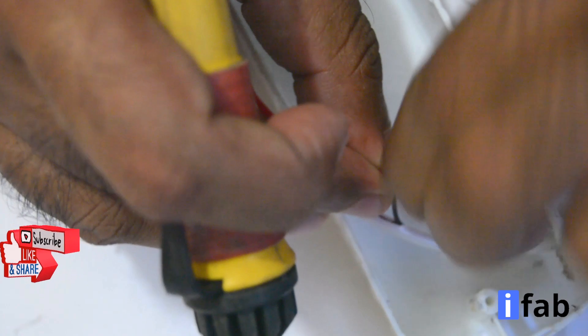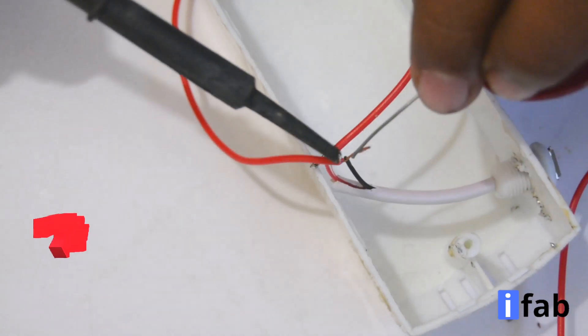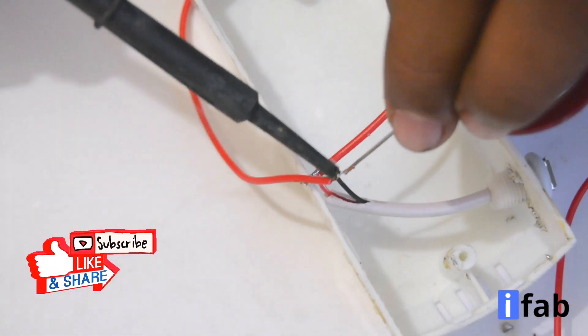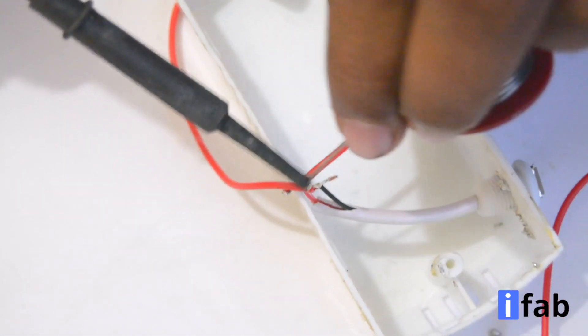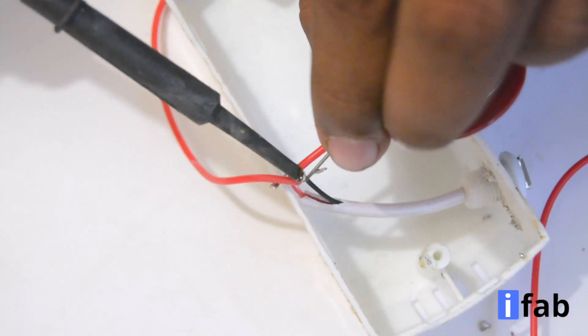Now connect the negative end of the USB port to the negative terminal of the battery. Solder the leads and connect with the multi-strand wire.